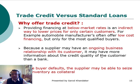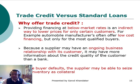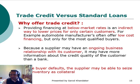Trade credit versus a standard loan — why offer trade credit? Providing financing at below-market rates is an indirect way to lower prices for only certain customers. For example, automobile manufacturers often offer low-cost financing, but only for the most qualified buyers. Second, because the supplier may have an ongoing business relationship with the customer, it may have more information about the credit quality than a bank. Third, if the customer defaults, the supplier may be able to seize the inventory as collateral.